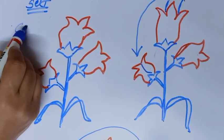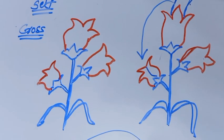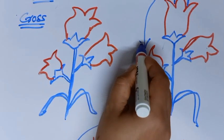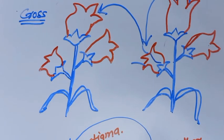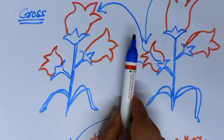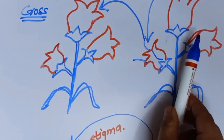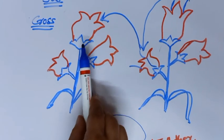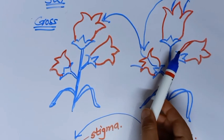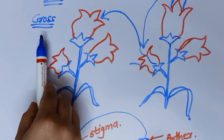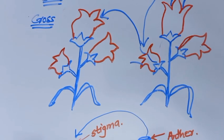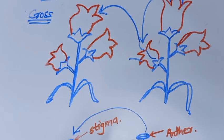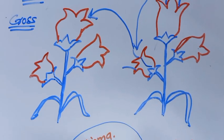In cross-pollination, the transfer of the pollen grain from the anther of the stamen to the stigma of the carpel takes place in 2 different flowers of 2 different mother plants, but of the same species. Meaning 1 flower is on one plant and another flower is on another plant. From one flower of one mother plant to another flower of another mother plant is called cross-pollination, but of the same species.